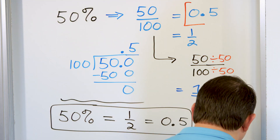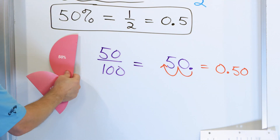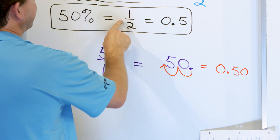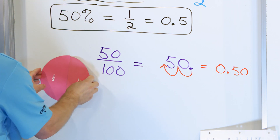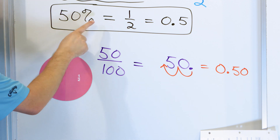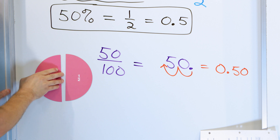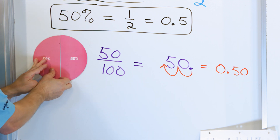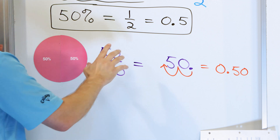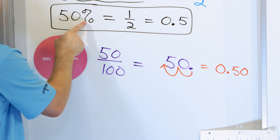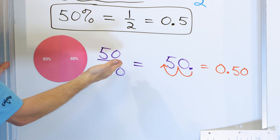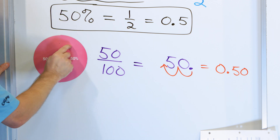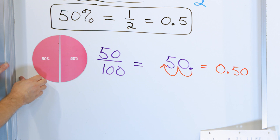We said 50% is equivalent to one half. Here's one half of a pizza, and here's another half. Together they make a whole pizza. So this one half is exactly equal to 50%, and the other 50% makes the other half. In fractions, you think of part over whole. In percentages, you think of part over 100. If you take 100 and divide by 2, you get 50 — so each half is 50%.